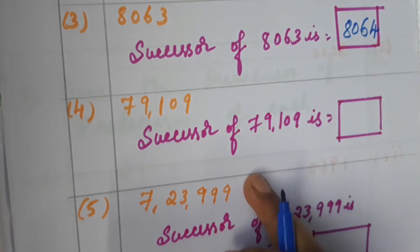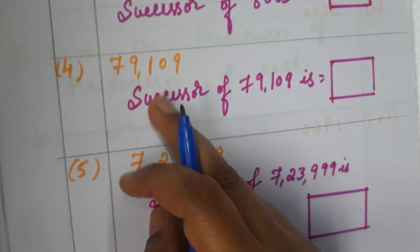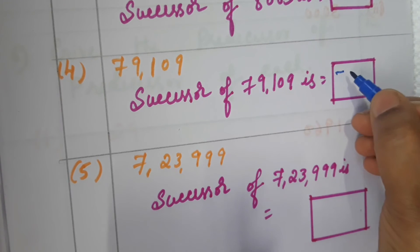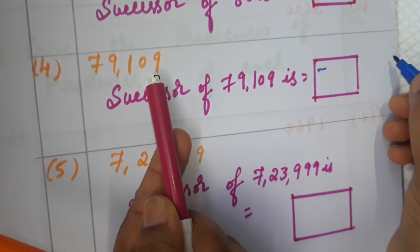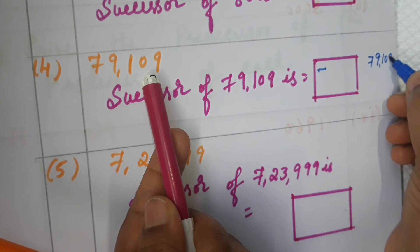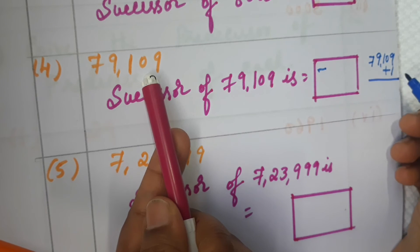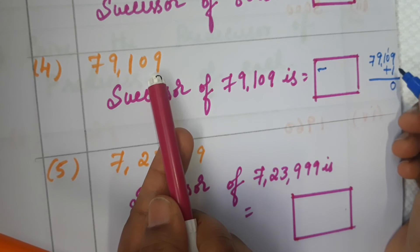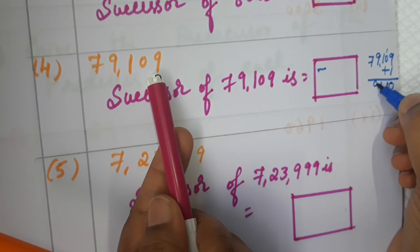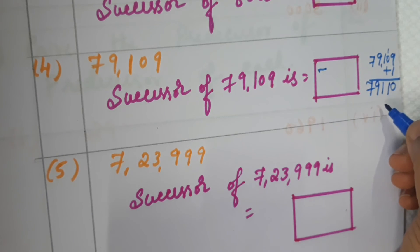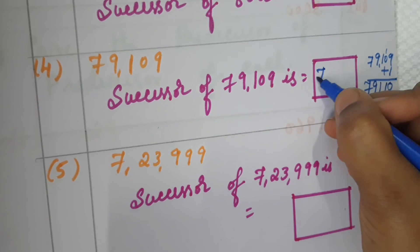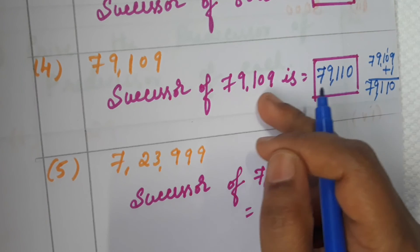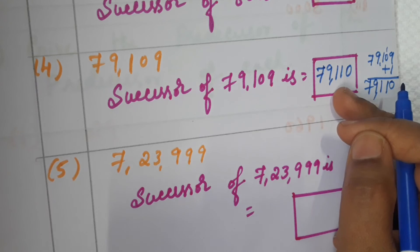Next: seventy-nine thousand and one hundred and nine. Successor of seventy-nine thousand and one hundred and nine — here, the last digit is nine, so be very careful. Add one: nine plus one is ten, write zero and carry one. One plus nine is ten, carry one again. Answer is seventy-nine thousand and one hundred and ten.